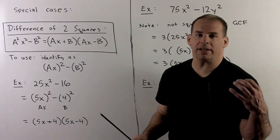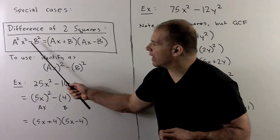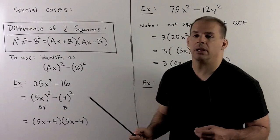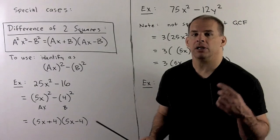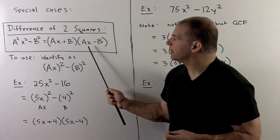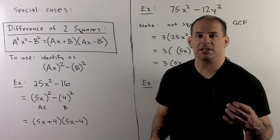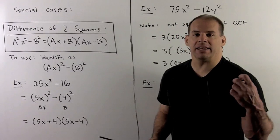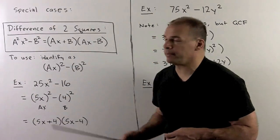The type of quadratic we're identifying here has no middle term. We have a minus sign in the middle, and squares on the ends — something like a²x² minus b². This will factor as (ax + b)(ax − b). To check, we FOIL this product. The first gives a²x², the outside gives ax times −b, the inside gives b times ax, and the last gives −b². The outside and inside cancel, leaving us with a²x² minus b², as promised.